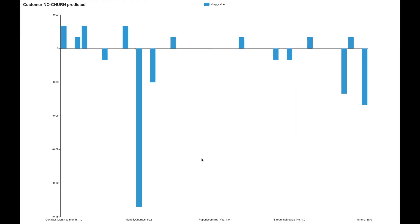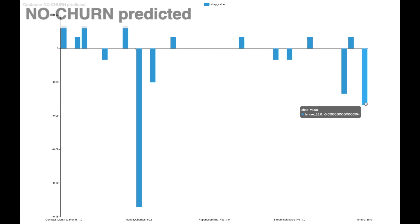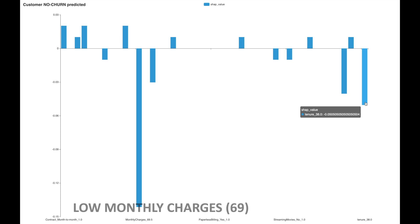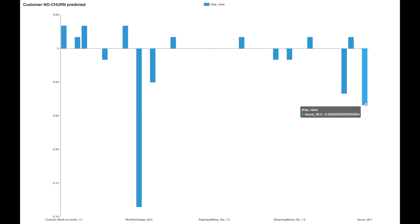Let us take another example of a customer who is predicted not to churn. The explanation of the prediction is shown here. We see that monthly charges and tenure are the top factors preventing the customer from churning. The tenure of 38 is high and thus the customer is not churning. This explanation also matches with our initial hypothesis.